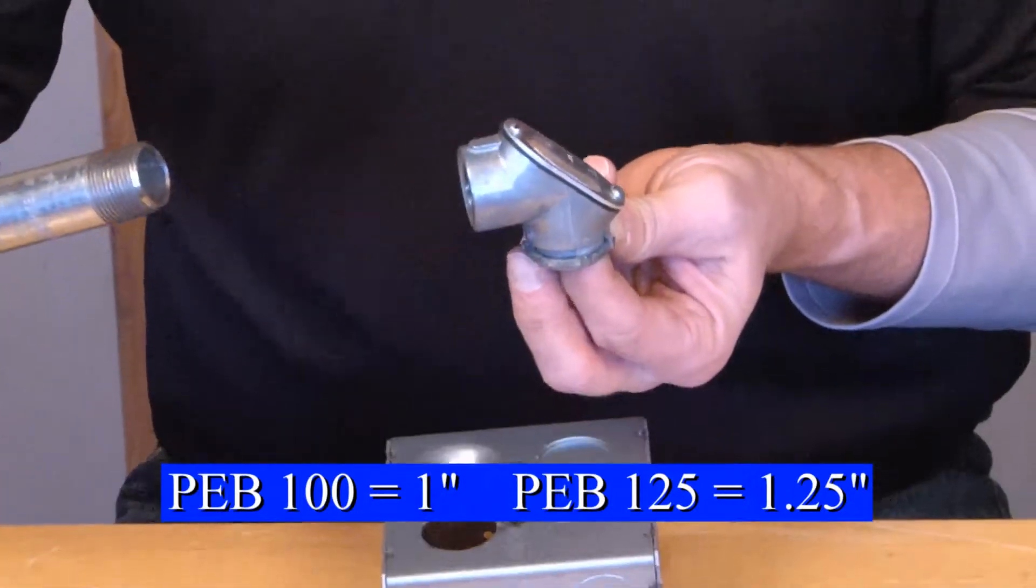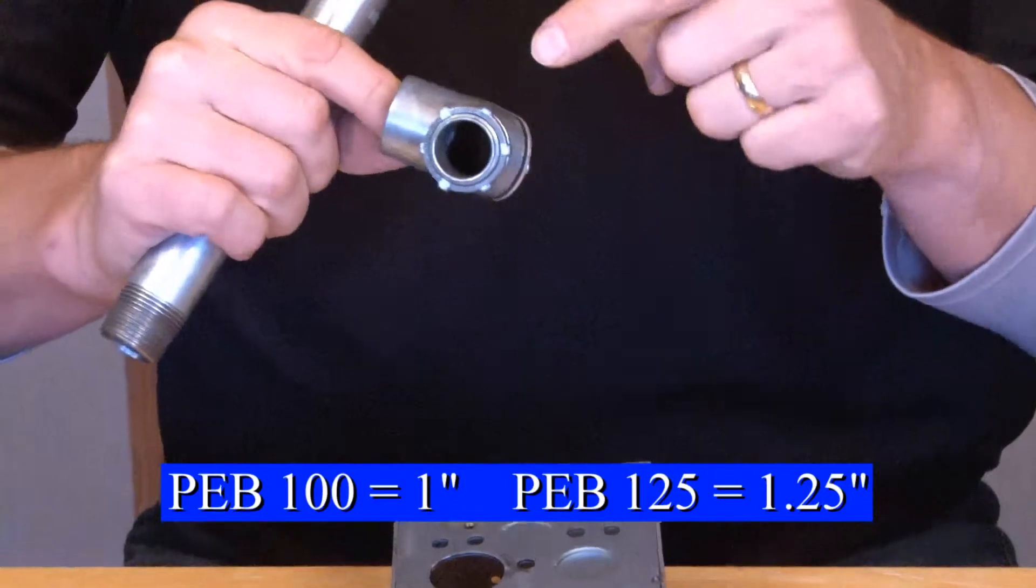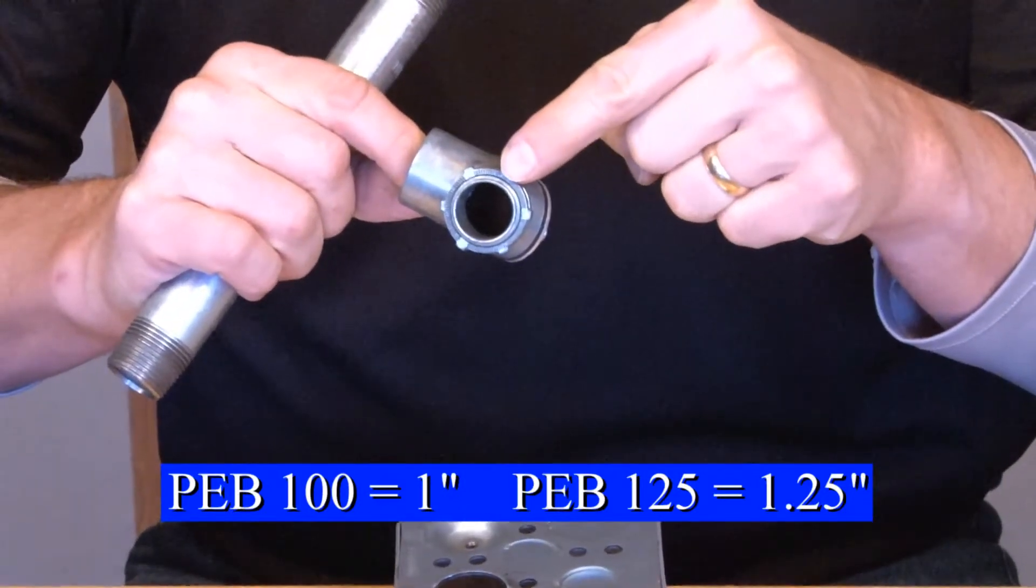The way this product works is quite simple. There's one threaded aperture and the other side has a lock nut and box connection.